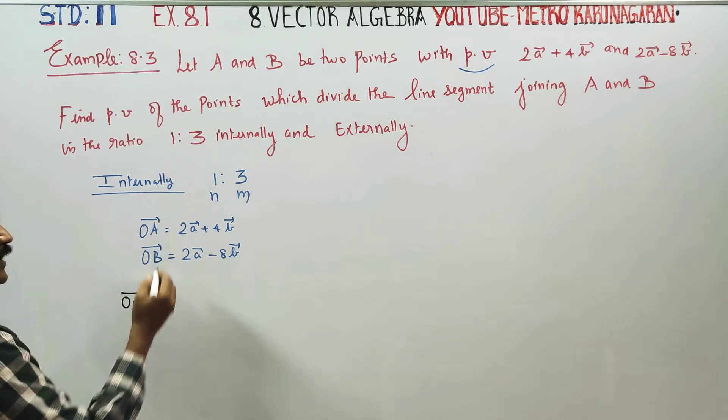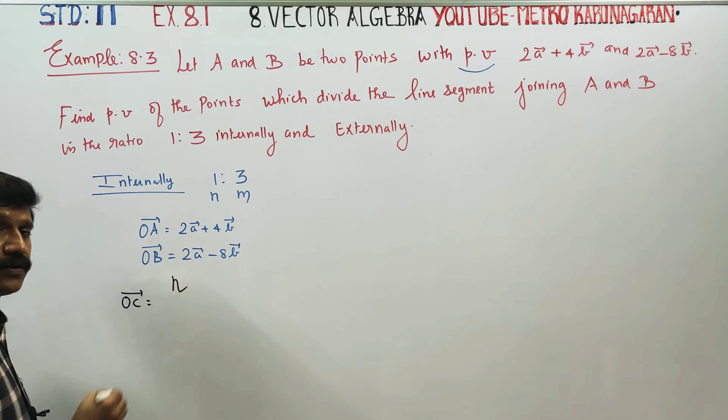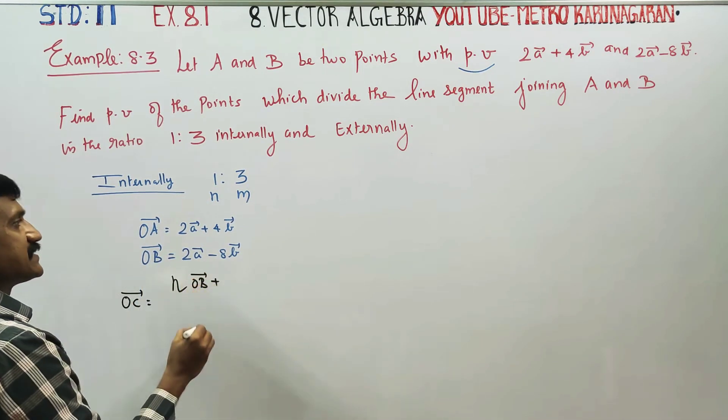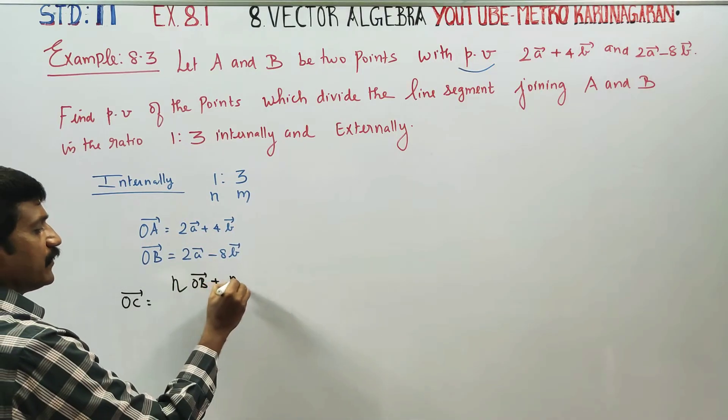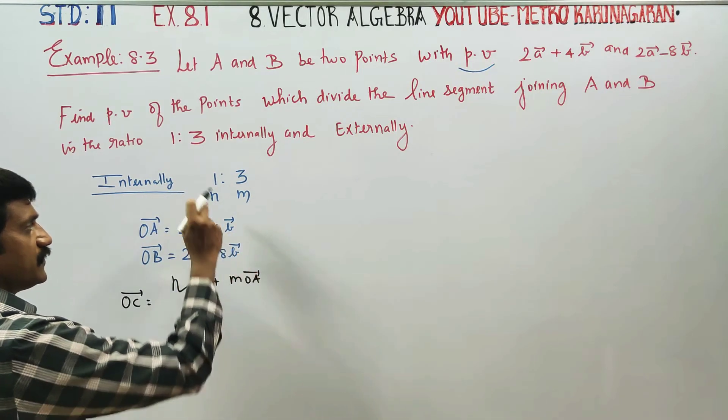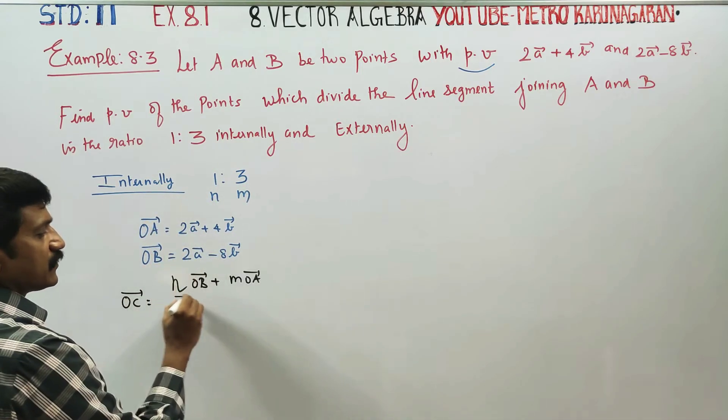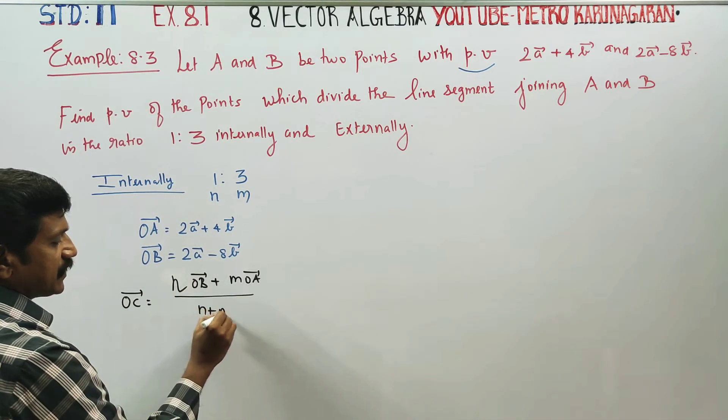You have formula, n into OB vector plus m into OA vector. First ratio, second vector, second ratio, first vector, by n plus m. This is formula.